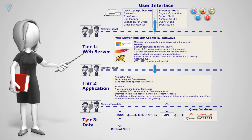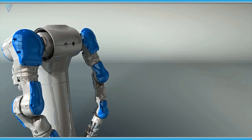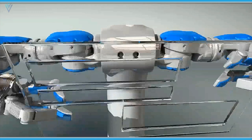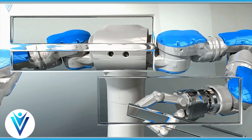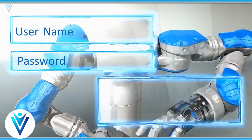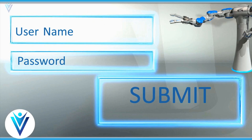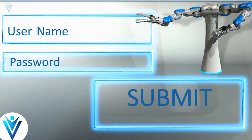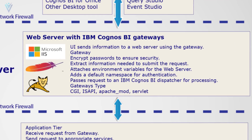Now let's see how these three different servers interact with each other for completing a login request. To perform a login we need to access the web server. Web server will generate a login page. On the login page we need to provide a username and password and then click on submit. On click of submit, all this information is sent to the web server. Web server retrieves all the information, encrypts the password, adds namespace and other environment variables, and forwards this request to the application server.